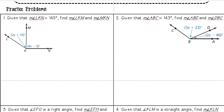So I know from my angle addition postulate that the entire angle is equal to the two other parts that make it up, so LKM plus MKN.